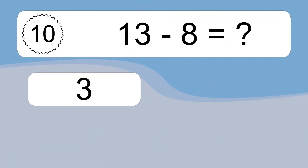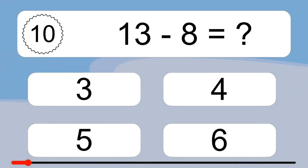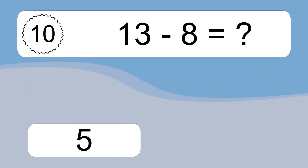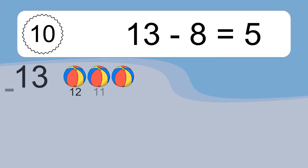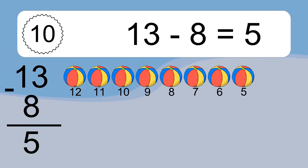13 minus 8 equals what? 13 minus 8 equals 5. Let's count it. 12, 11, 10, 9, 8, 7, 6, 5.